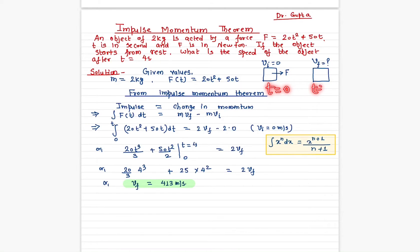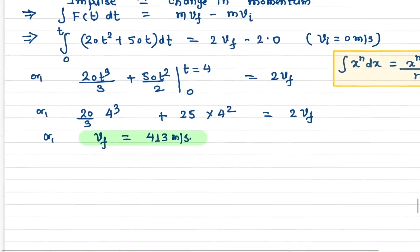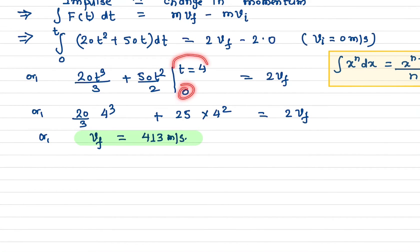The time is from here—time equals zero seconds—and here time equals 4 seconds. So the limit is from time equals zero to time equals 4 seconds, and this is simply equal to 2 times v_f.